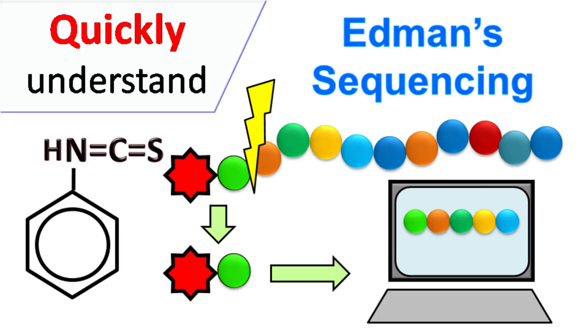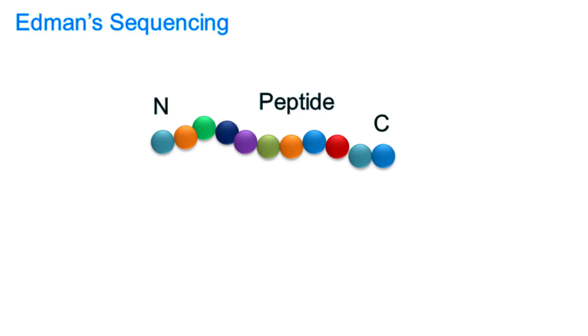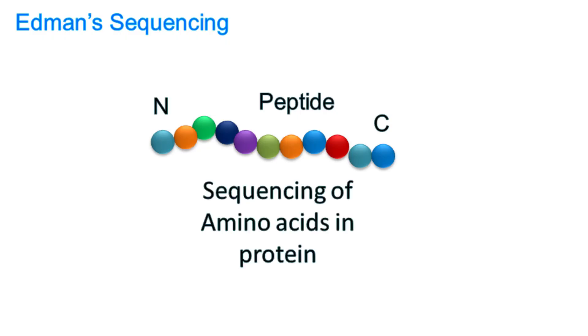Hey guys, Quickback Chemistry Basics here. Let's talk about Edman's degradation method for protein sequencing. Edman degradation is a method used for sequencing of amino acids in a protein.